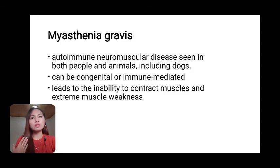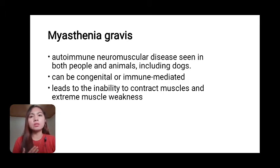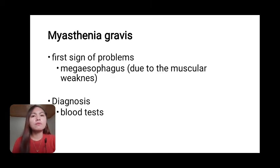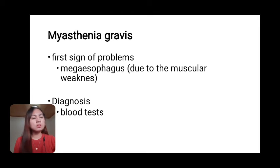Myasthenia gravis is an autoimmune neuromuscular disease seen in both people and animals including dogs. It can be congenital or immune-mediated and leads to inability to contract muscles and extreme muscle weakness. The first sign is often megaesophagus due to muscular weakness; enlargement of the esophagus leads to difficulty swallowing and can cause regurgitation, which can lead to inhalation pneumonia. Diagnosis is by blood test.